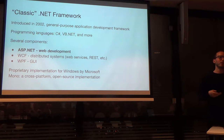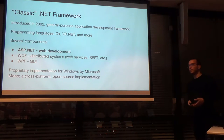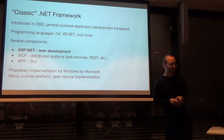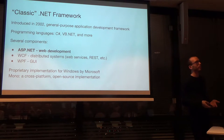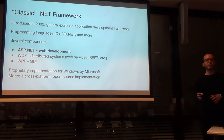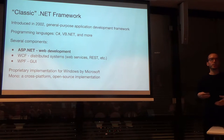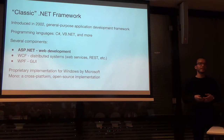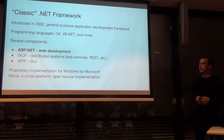.NET traditionally had two main implementations. One is what we usually call just the .NET framework — the proprietary implementation by Microsoft, which is closed source and only supports Windows. There's another implementation called the Mono Project, which is an open source cross-platform project and another implementation of .NET, mainly targeting Linux. We'll talk a little bit about that as well.